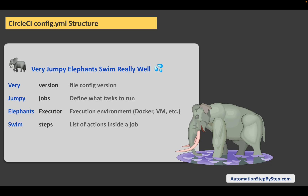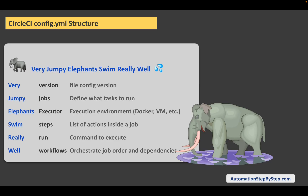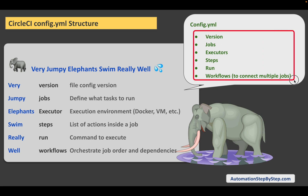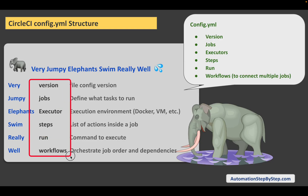S is for steps, which are the list of actions inside a job — every job can have multiple steps. R is for run, which are the commands to execute. And finally, W is for workflows, where we say which jobs to run or in which order these jobs should be run. So just remember this mnemonic: Very Jumpy Elephants Swim Really Well. The sections are: version, jobs, executors, steps, run, and workflows.